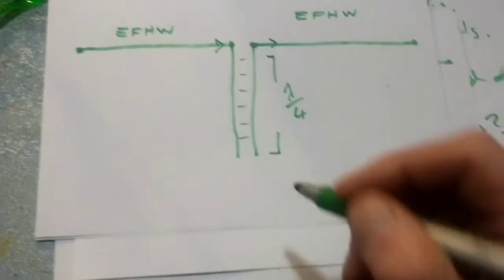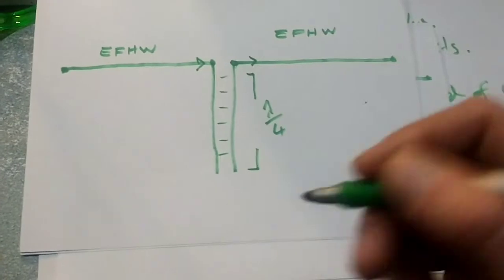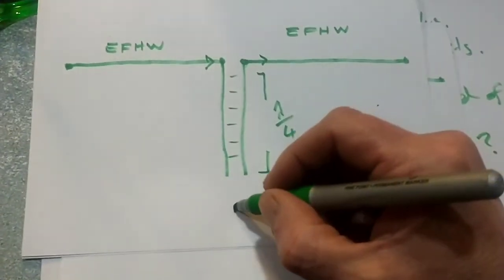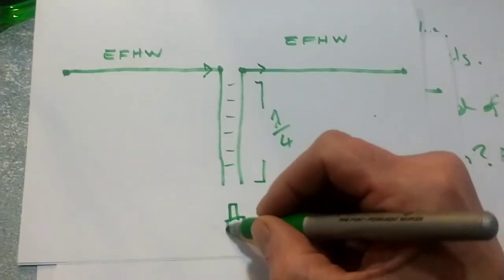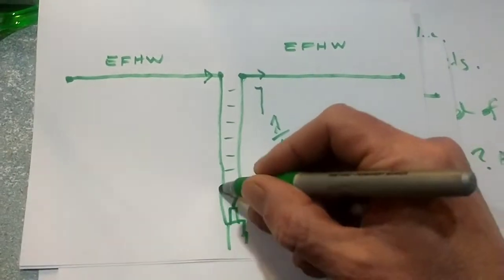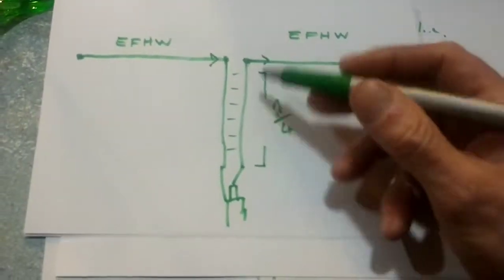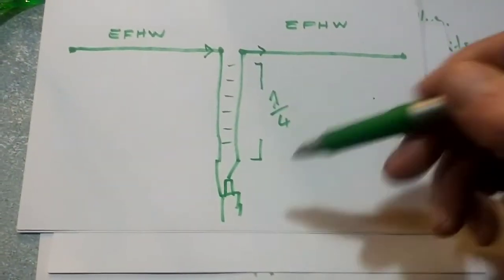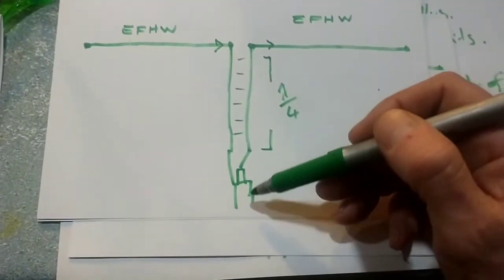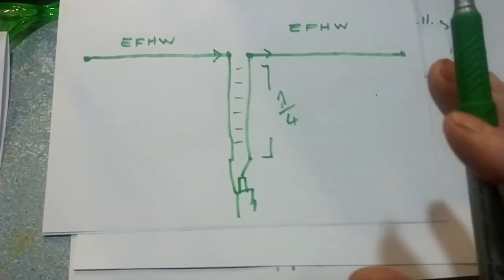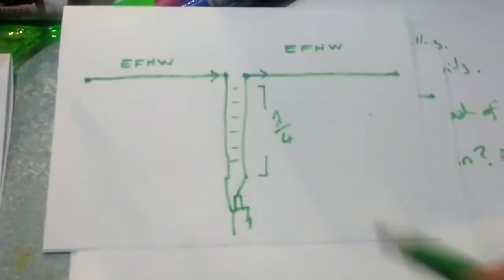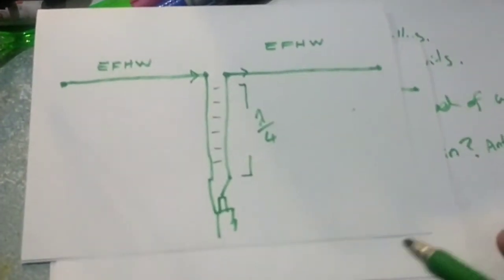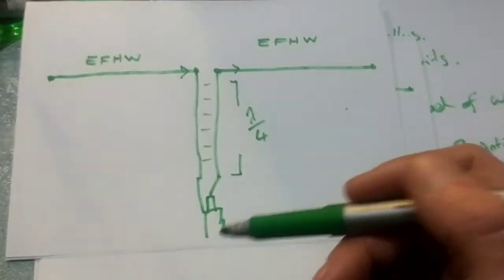In my case, you could use a one-to-one current balun or some sort of choke. In my case, I've quite simply tethered the coax to the quarter wave balanced line. I know that coax isn't balanced, but my previous video will show the results anyway.